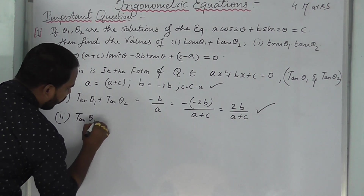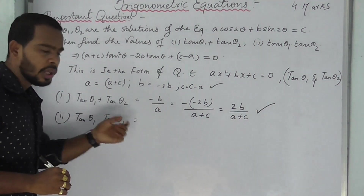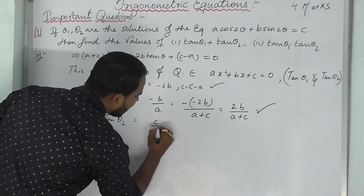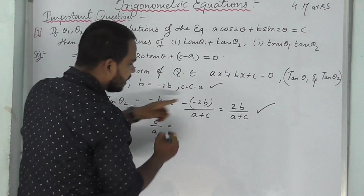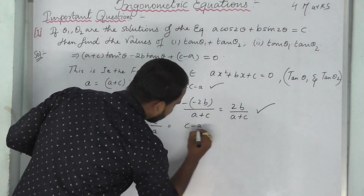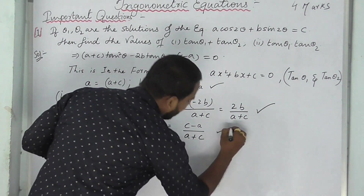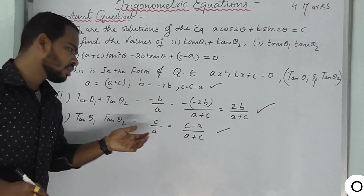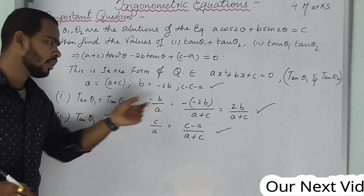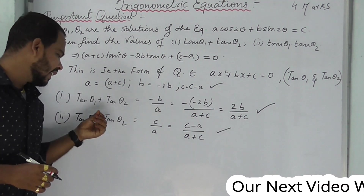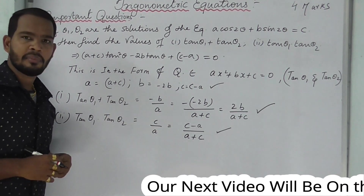For the product of the roots, the formula is c by a. Here c equals C minus A, and a equals A plus C. So tan θ₁ into tan θ₂ equals (C minus A) by (A plus C). To summarize: tan θ₁ plus tan θ₂ equals 2B by (A plus C), and tan θ₁ into tan θ₂ equals (C minus A) by (A plus C).